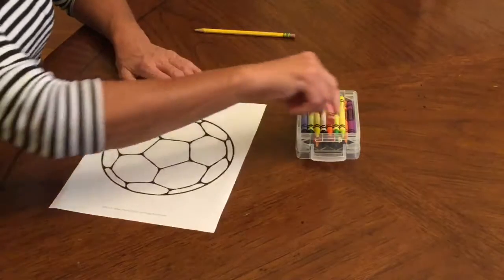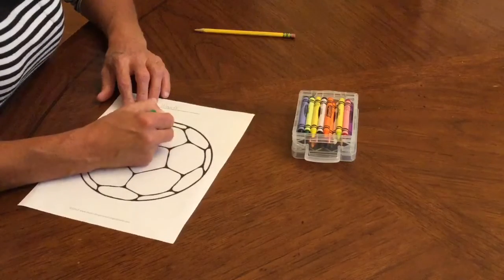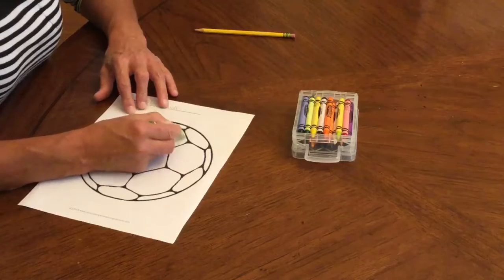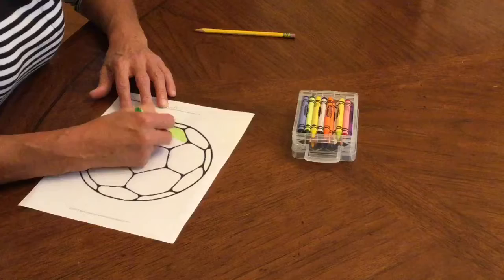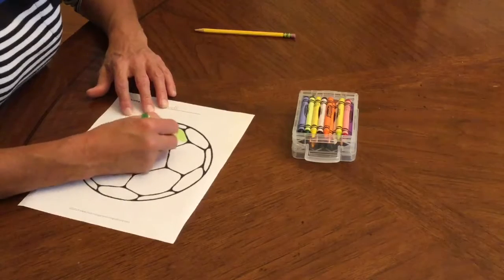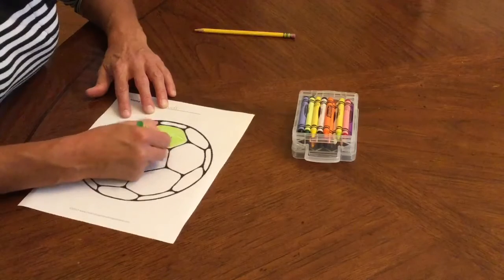So now I'm going to switch colors. I'm going to go to green to color in another section. I'm going to color this big section in with this green. So you're going to color. Notice how I'm coloring nice and neatly. I am taking my time. I am staying inside the lines, and I am doing a fabulous job here, and that's what I want you to do, and I know you can.